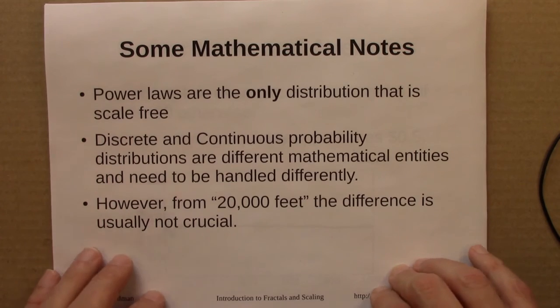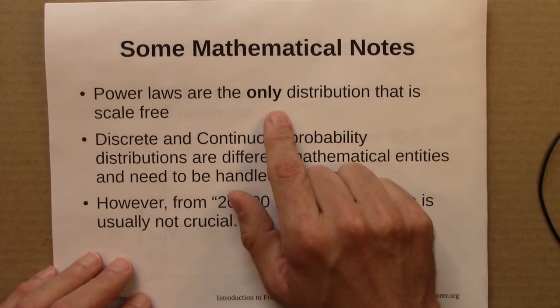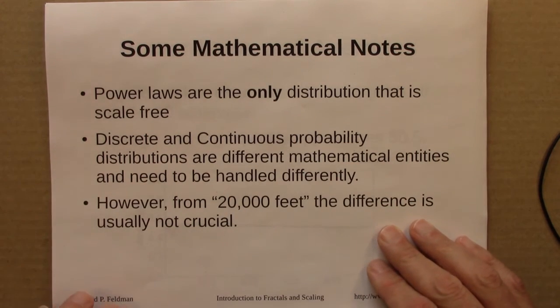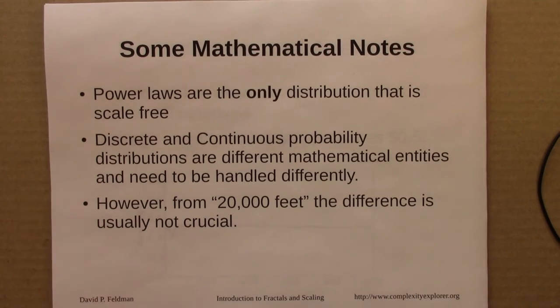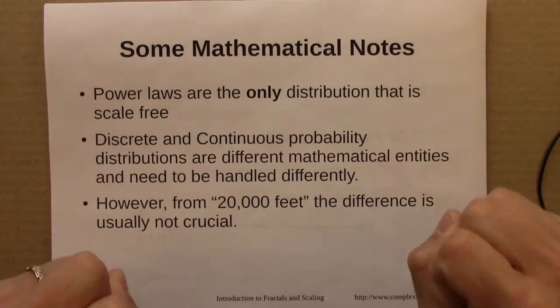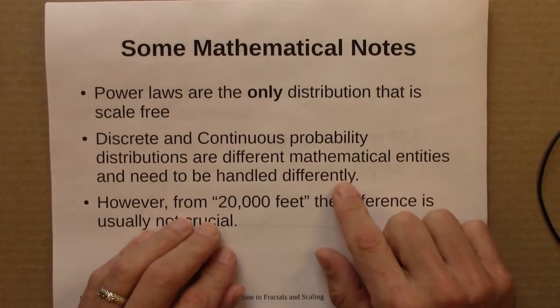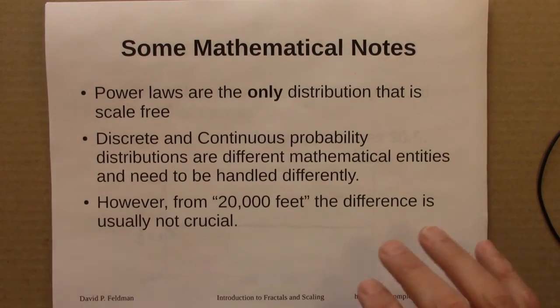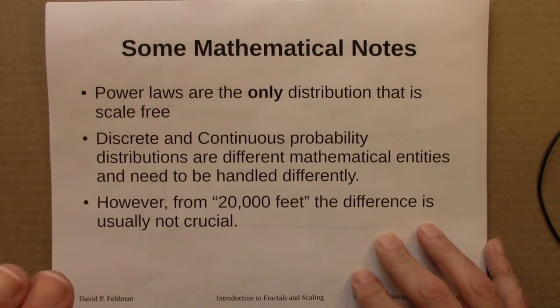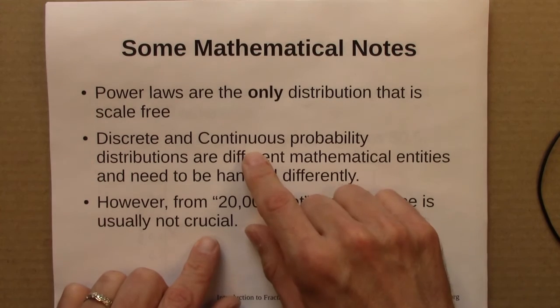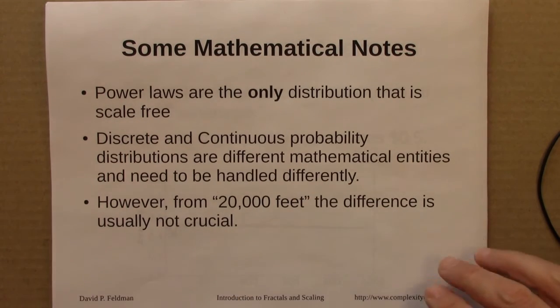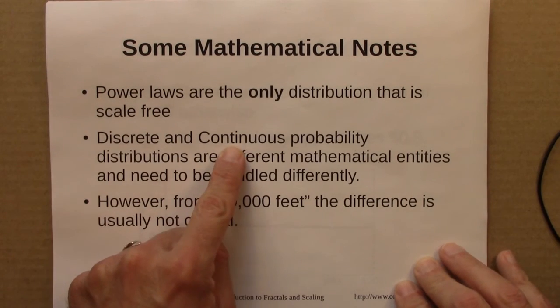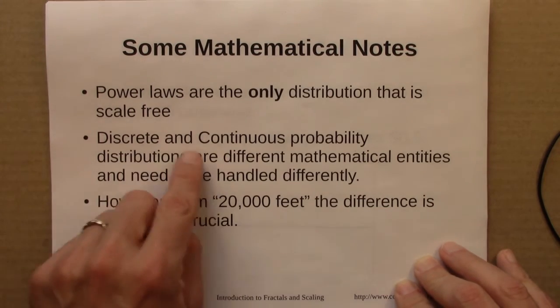So a few mathematical notes. One can show that power laws, in fact, are the only distribution that is scale-free. So that if you see scaling behavior like this, you know you have to have a power law. And also, I mentioned briefly that discrete and continuous probability distributions are different mathematical things. And if you're working with them, trying to get numbers out of them, you need to handle them differently and interpret them differently. However, from 20,000 feet, which is where we'll operate for most of this course, and by that I mean trying to take a sort of more conceptual big picture, the difference between these two types of distributions is usually not crucial. If you want to actually get numbers out of stuff, then one needs to be a little more careful.